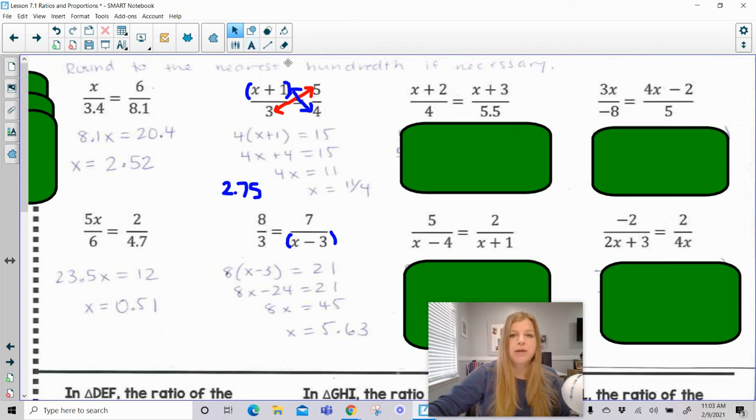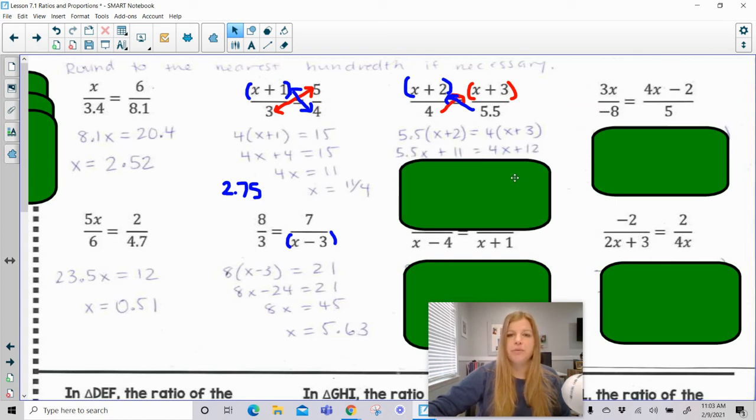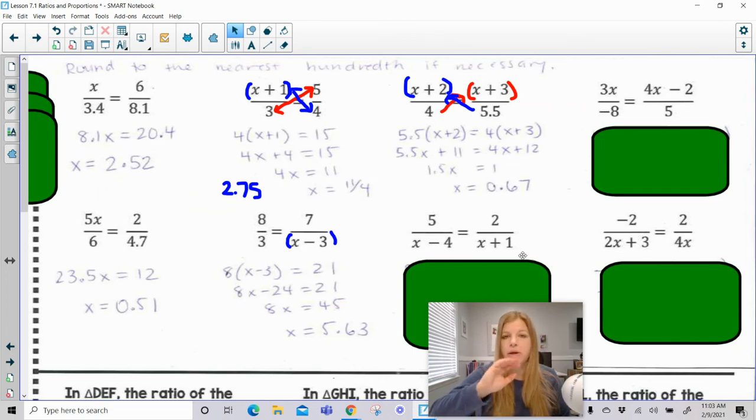Now this next problem, you're going to see you have two sets of binomials. So you're going to do 4 times x plus 3 in parentheses, and then 5.5 times this entire x plus 2. When we do that, we have parentheses on both sides of our equation, and then the rest is just basic solving equation skills. Distribute the 5.5, distribute your 4, solve for x, and we get 2 thirds or 0.67. I'm going very quickly through the solving steps because we should be experts at solving. We're in geometry now, so this is not a big deal.